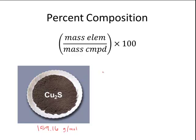In order to find the percentage of copper in the compound, I need to take the total mass of copper in the chemical formula. So because there are two coppers, the mass of the copper is 127.1. And then I divide that by the total mass of the compound, which is 159.16. Take this times 100, and I get a total percentage of 79.86% copper.